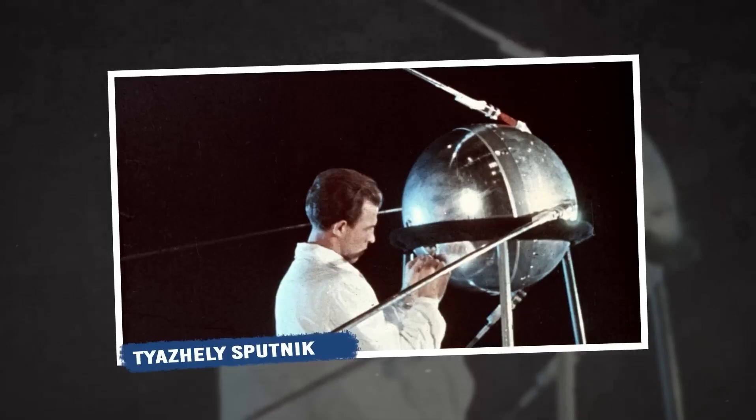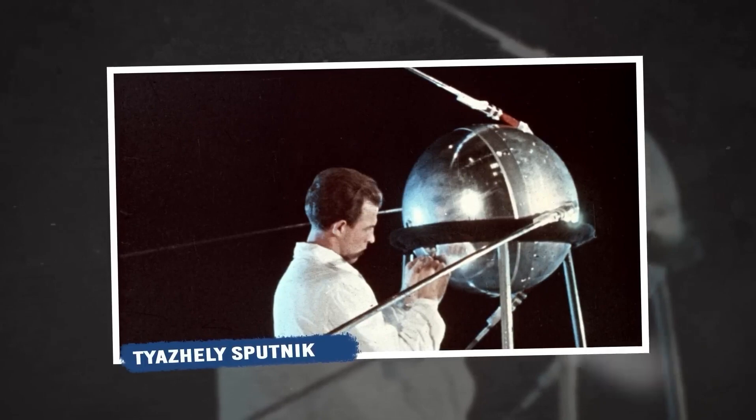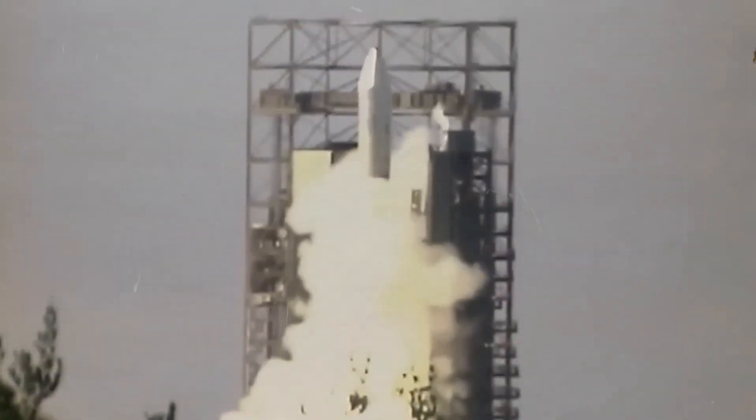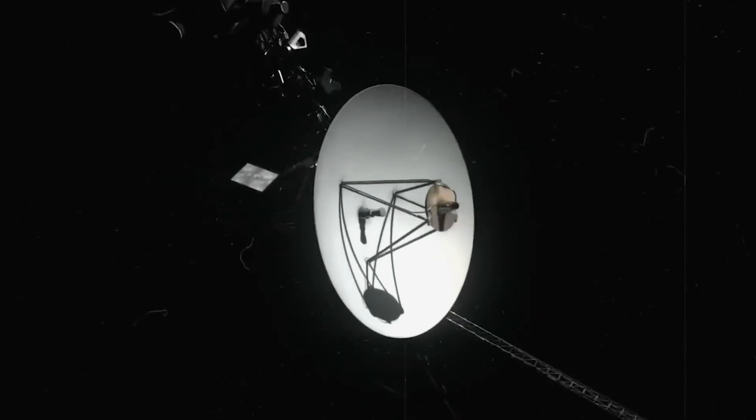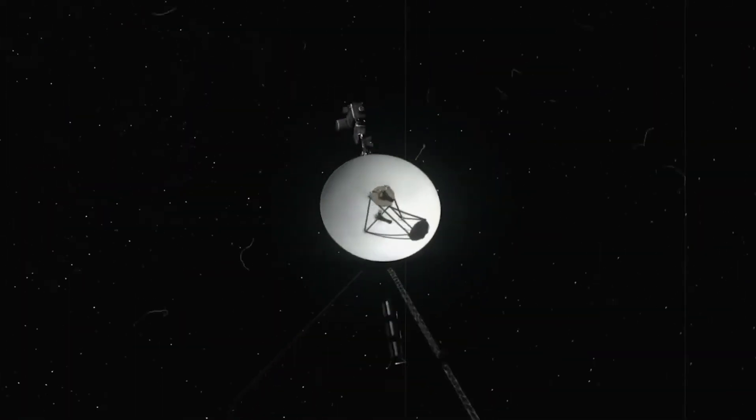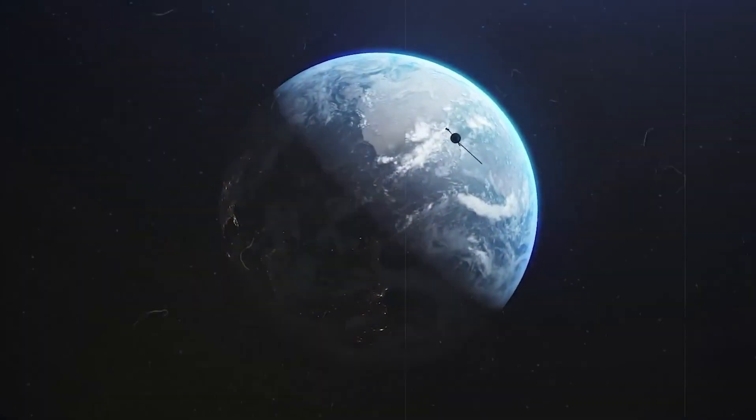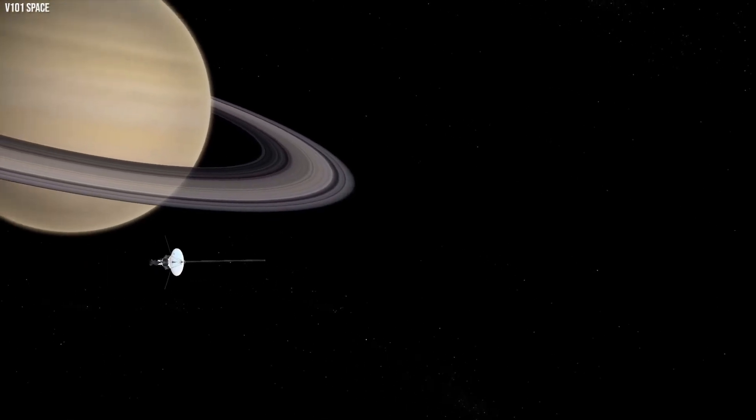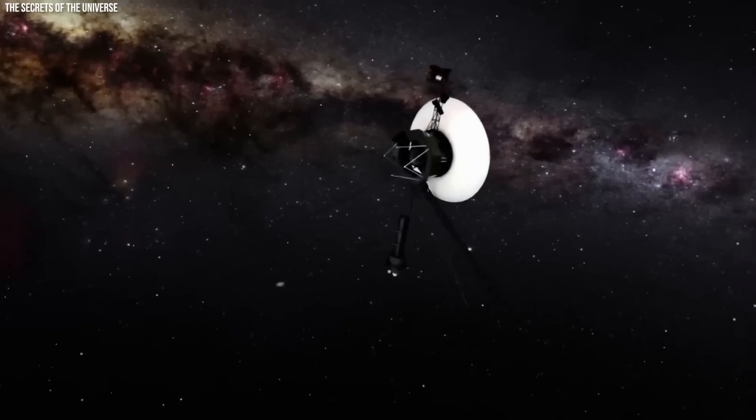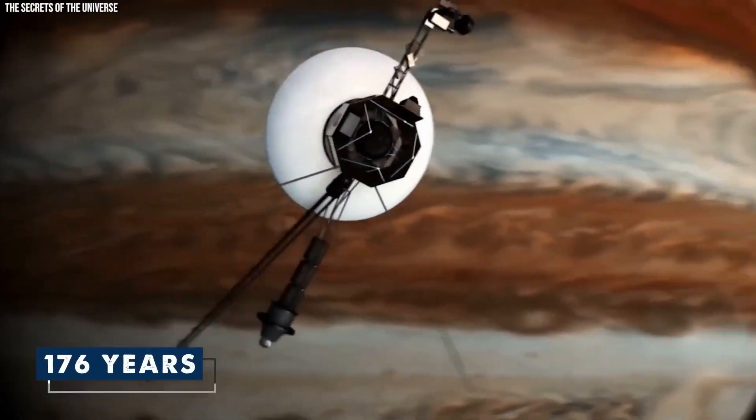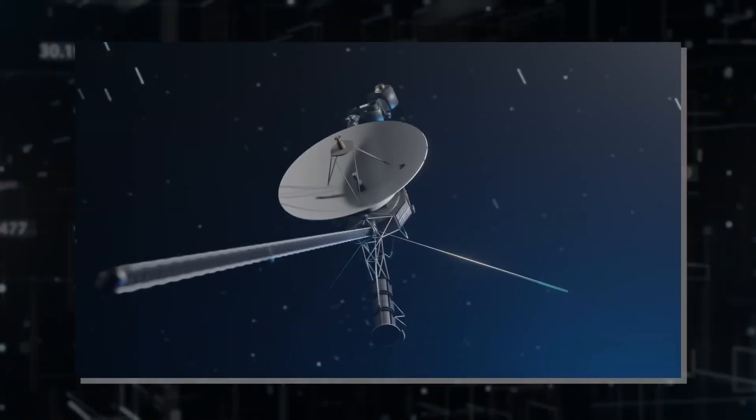In November 2018, Voyager 2 embarked on an extraordinary journey to the interstellar seashore, arriving at the heliopause, the border of our solar system, 120 astronomical units from Earth, the same distance reached by its twin six years prior. But what puzzled scientists was that Voyager 2 detected no changes in the magnetic field as per the theoretical models, adding yet another enigma to the mix.